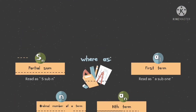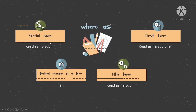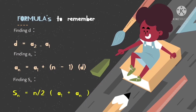Here, s sub n is the partial sum, a sub 1 is the first term, n is the ordinal number of a term, and a sub n is the nth term. When finding the partial sum of an arithmetic sequence, we use three formulas: the common difference, the nth term, and the partial sum.